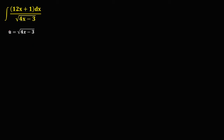Then to eliminate this radical, we square both sides. So therefore, u squared is equal to 4x minus 3.